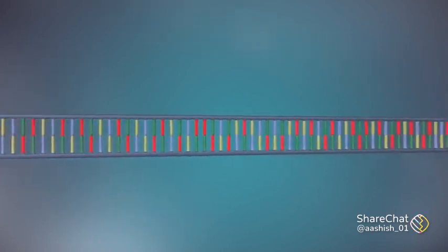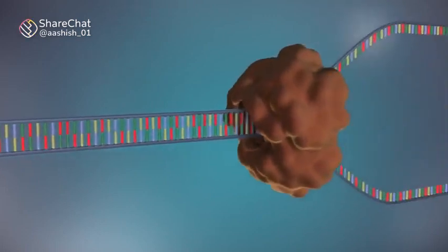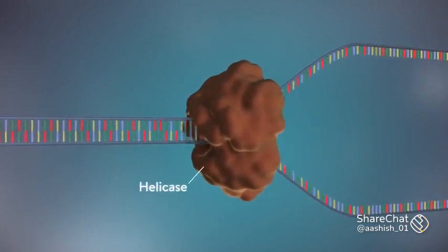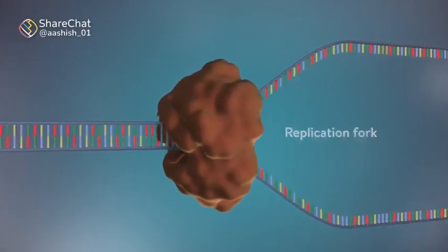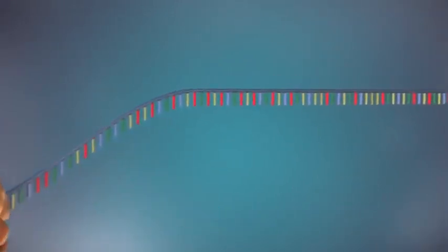The first step in DNA replication is to separate the two strands. This unzipping is done by an enzyme called helicase and results in the formation of a replication fork. The separated strands each provide a template for creating a new strand of DNA.